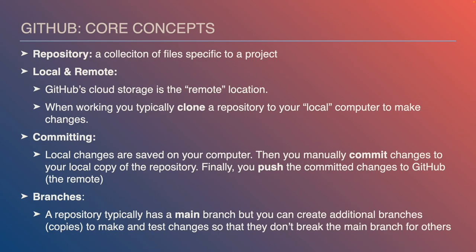Let me go into some core concepts of GitHub. A repository is a collection of files specific to a project. There are local and remote versions — the remote version lives on GitHub in the cloud, and the local version is what you clone to your computer to make changes. Although there's one canonical remote repository on GitHub, multiple people could be contributing and each have their own local version.